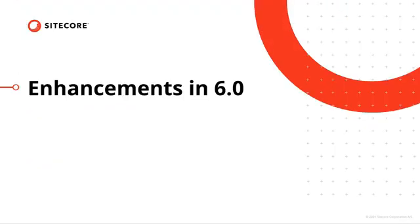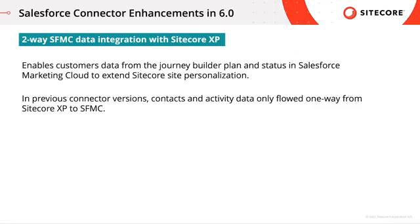Let's have a look at the enhancements introduced with Sitecore Connect for Salesforce Marketing Cloud version 6.0. In previous connector versions, contacts and activity data only flowed one way from Sitecore Experience Platform to Salesforce Marketing Cloud. In this new version of the connector, we're allowing for two-way data integration between Salesforce Marketing Cloud and Sitecore.